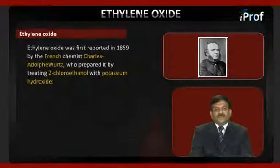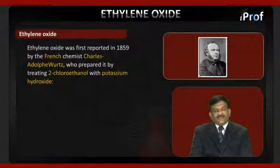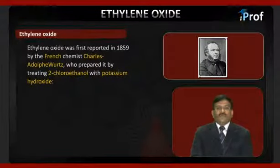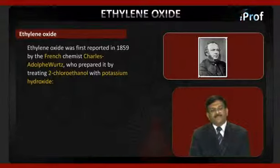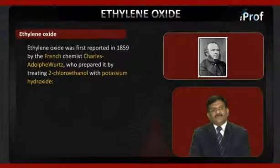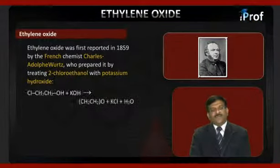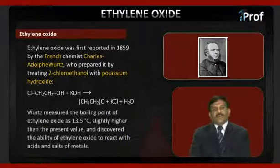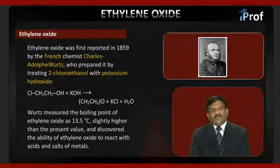Ethylene oxide was first reported in 1859 by French chemist Charles Adolphe Wurtz, who prepared it by treating 2-chloroethanol with potassium hydroxide. The reaction is: CH2Cl·CH2OH + KOH → CH2CH2O + KCl + H2O. Wurtz measured the boiling point of ethylene oxide as 13.5 degrees centigrade, slightly higher than the present accepted value.